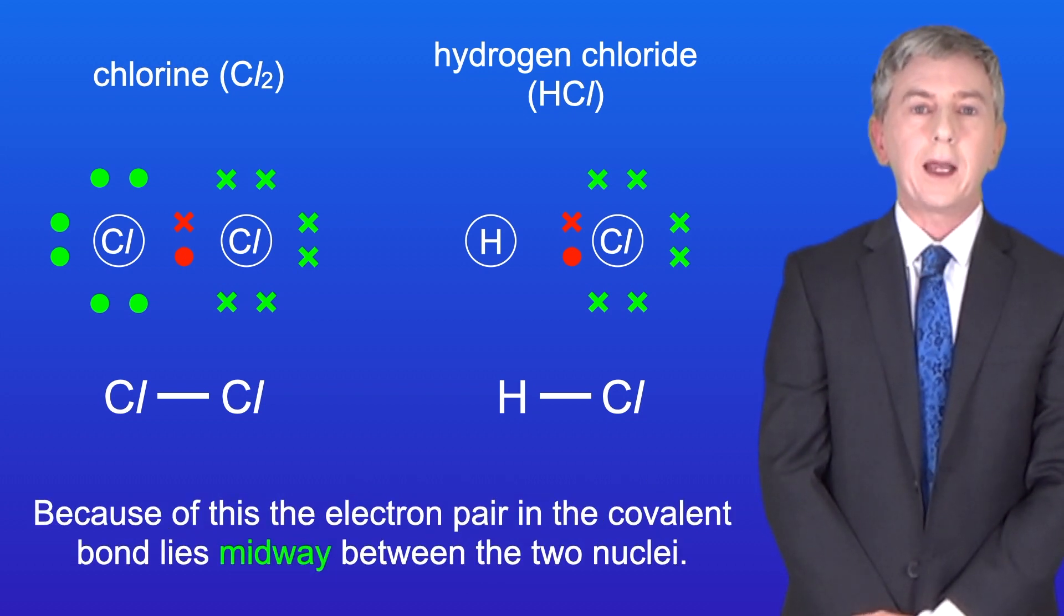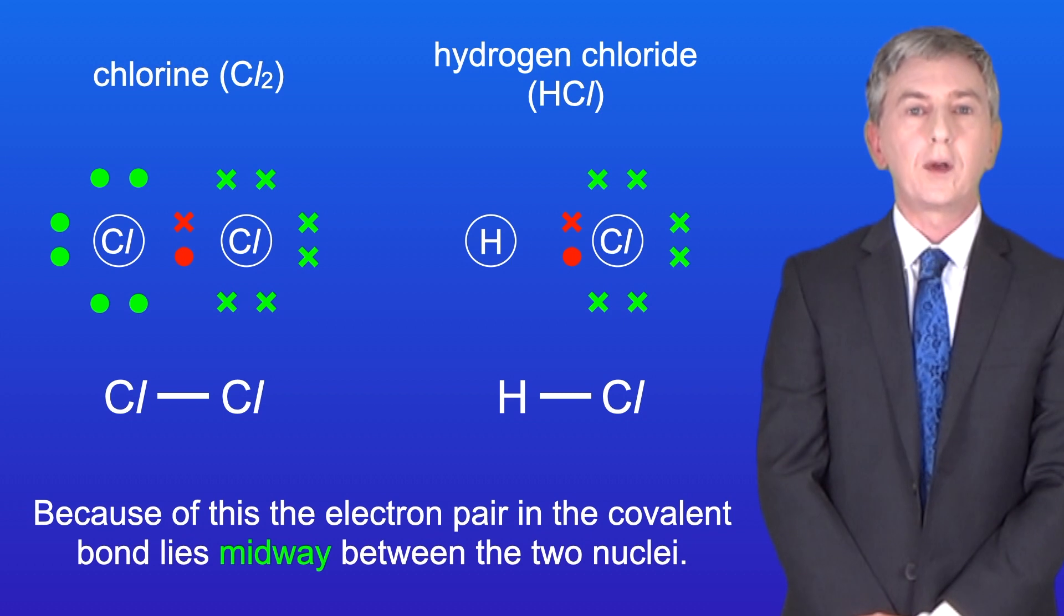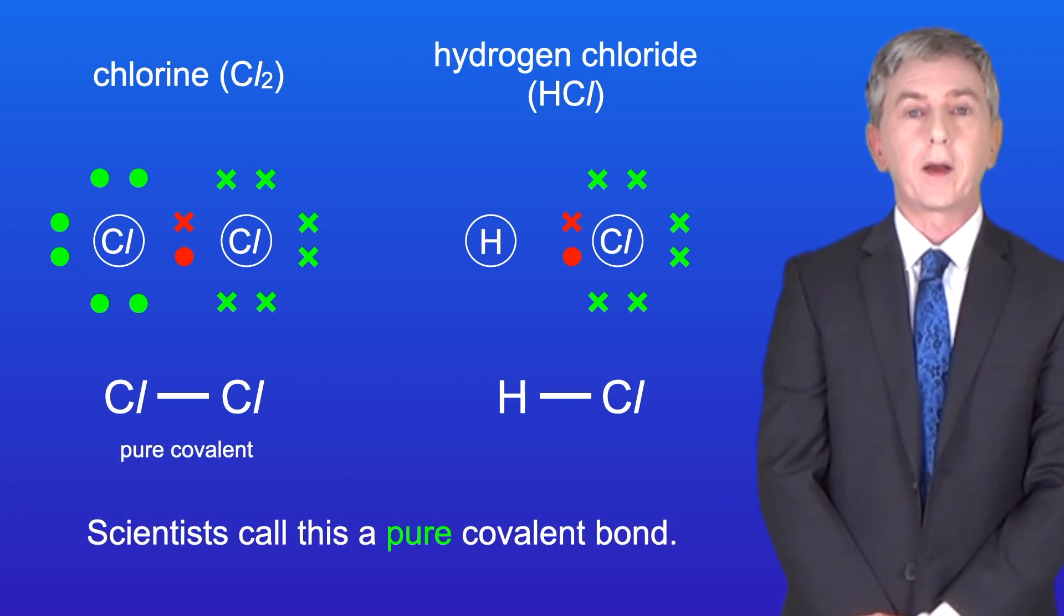Because of this, the electron pair in the covalent bond lies midway between the two nuclei, and scientists call this a pure covalent bond.